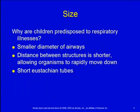So why are children so predisposed to respiratory illnesses? It's the size of the airways — they have very narrow airways, and any swelling narrows that airway to the point where they have difficulty breathing. It's also the distance between the structures; it's a very short distance from an infection in the throat to get down into the trachea, bronchi, bronchioles, and alveoli. Everything's close together and it's not hard for infection to move.